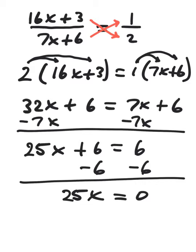And then finally, since we've separated the variable terms from the constant terms, division at the end. 0 divided by 25. Very good. 0.